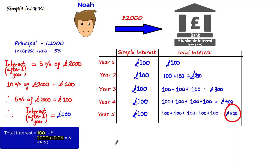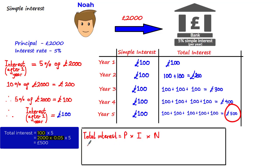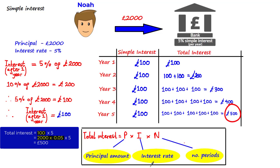For simple interest questions in general, you can calculate the total interest after a number of periods or years using the following formula: total interest equals P times I times N, where P is the principal amount, I is the interest rate (as a decimal), and N is the number of periods. In most questions, N is the number of years. Some books use R instead of I for the interest rate, but using I gives us the word PIN, which is easier to remember when you think about simple interest being fixed or pinned to a value.